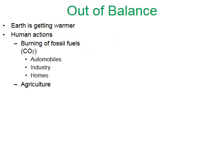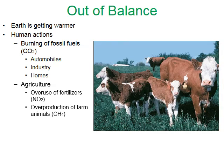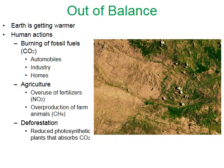Agriculture has also played a role. The overuse of fertilizers on farms releases a lot of nitrogen oxides into the atmosphere — nitrogen oxides are a greenhouse gas. The overproduction of farm animals has released a lot of methane into the atmosphere, and methane is a greenhouse gas. The deforestation of forests around the world is also contributing, whether through clear cutting or slash and burn techniques — deforestation removes photosynthetic plants that would normally absorb and remove carbon dioxide from the atmosphere.